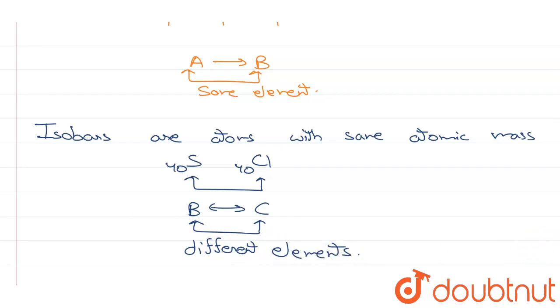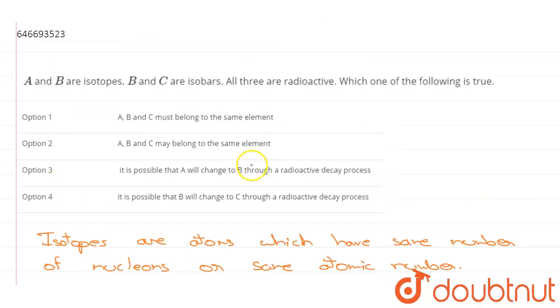So now, the four options that we have. Option 1 says that A, B and C must belong to the same element. A and B will belong to the same element, but C will be different. Therefore, A, B and C will be different elements. So option 1 is incorrect.